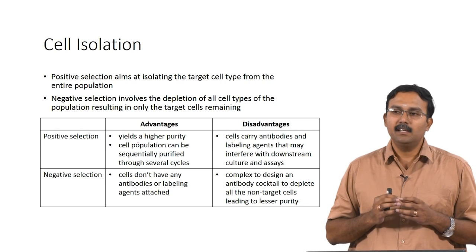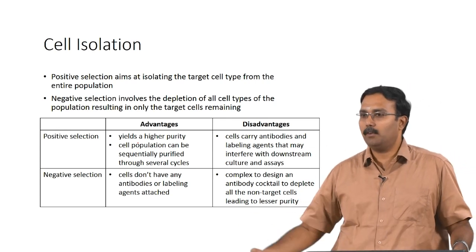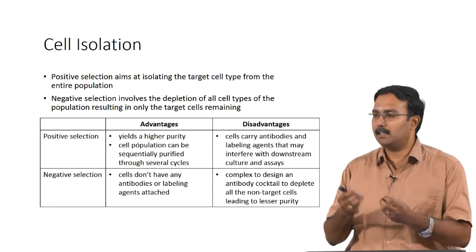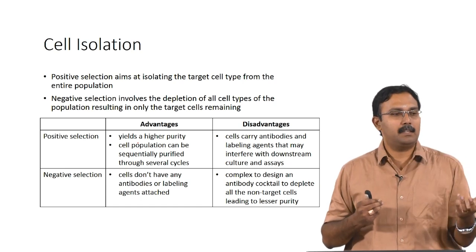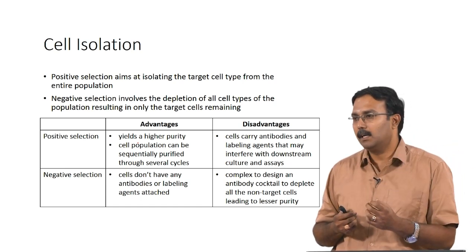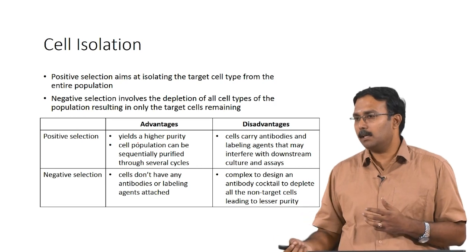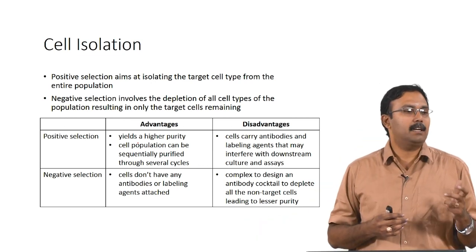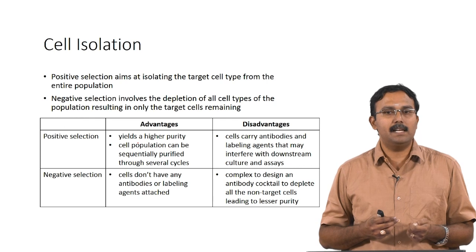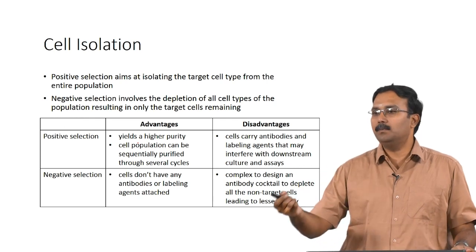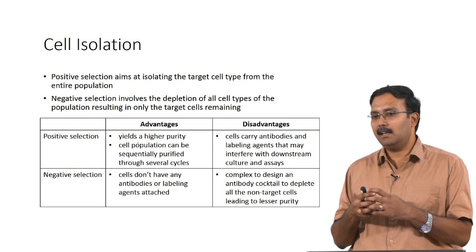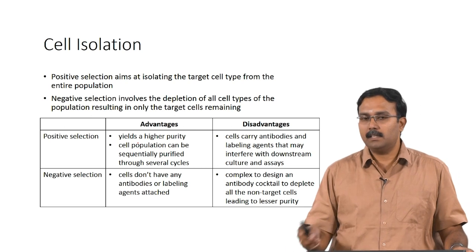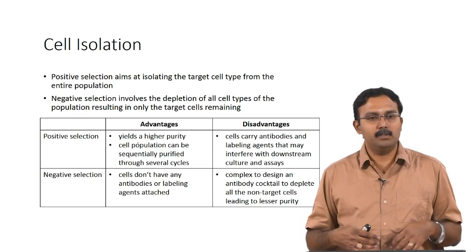The cells from positive selection can also be further processed again and again for purification. However, the disadvantage is that you have actually used some antibody or labeling agent that will attract the cell type of interest, and your cell might have this attached to it — which could interfere with further processing, culturing, or in vivo use.